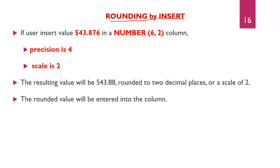When entering numeric values, if the user enters a value where precision is 4 and scale is 2, the value will be rounded to 2 decimal places because the scale is 2. The rounded value will be entered into the column.